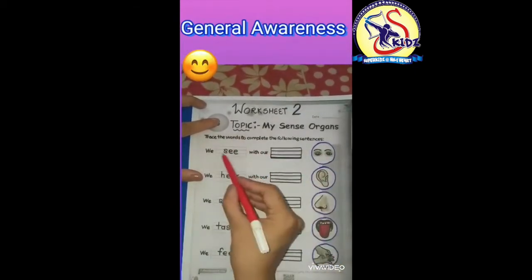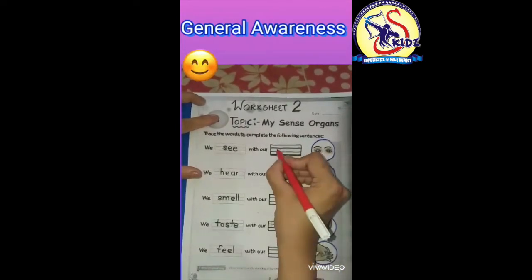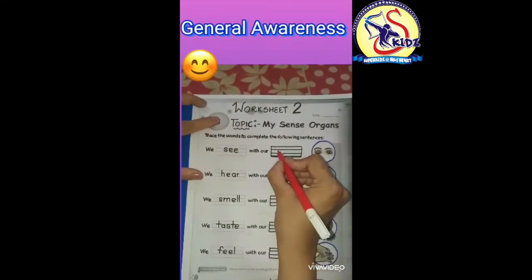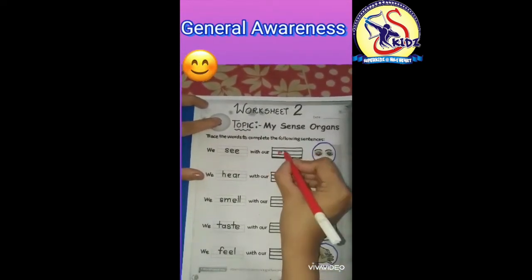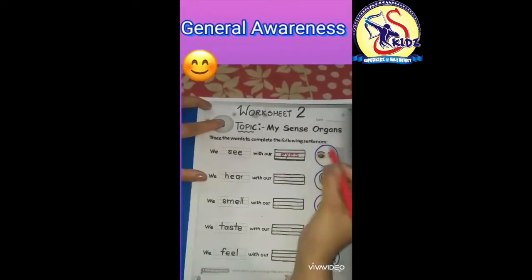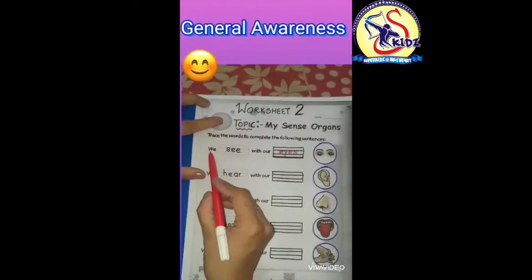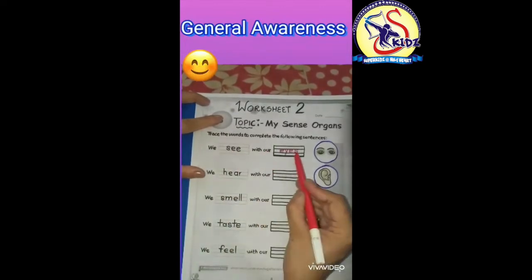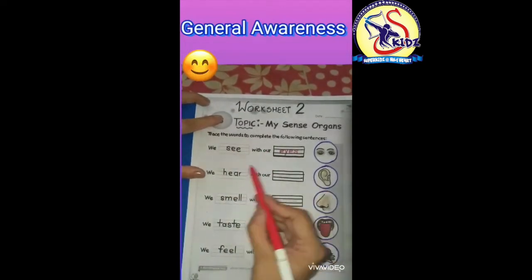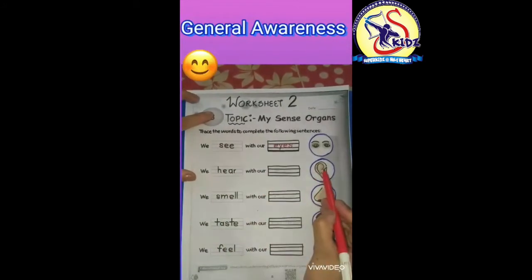We see with our eyes. First of all, we will trace the word E-Y-E-S, eyes. Spell: eyes — E-Y-E-S — eyes. We see with our eyes. Next is: we hear with our...